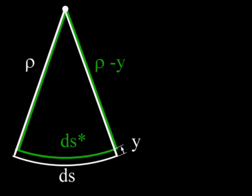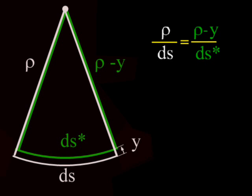Two similar isosceles triangles result, and we can write rho over ds equals rho minus y over ds star.